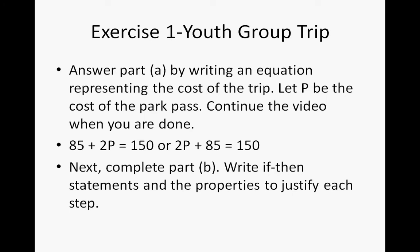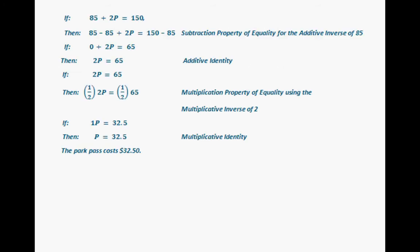All right, you should be done with part B. Again, they give the example using the equation 85 plus 2 times P equals 150. So yours might look slightly different than the rest of this process. However, you should end up with P is equal to 32.5. The only other difference here is they decide to multiply by the reciprocal of 2. You can also use the division property of equality and show that you are dividing both sides by 2.